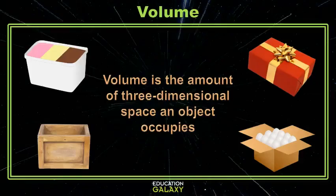It has to do with three-dimensional objects. Volume is the amount of three-dimensional space an object occupies. And although you can find the volume of any object, today we'll just be doing volume of rectangular prisms.